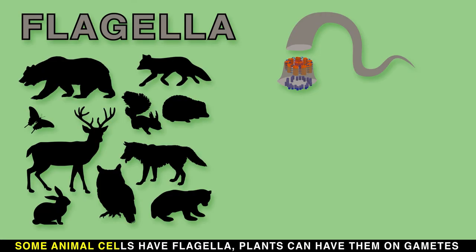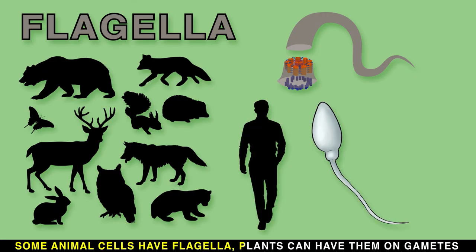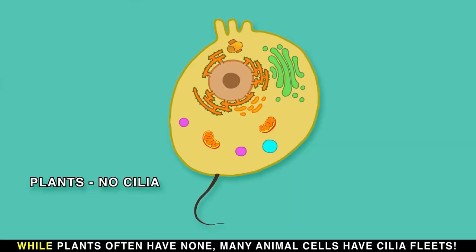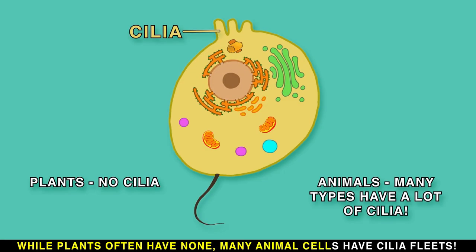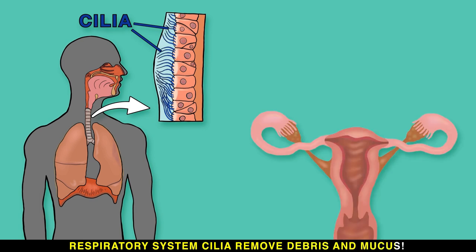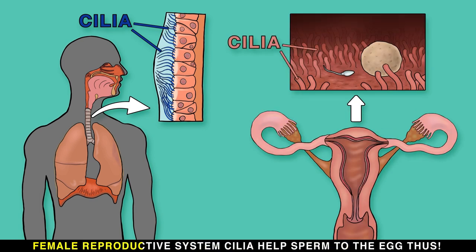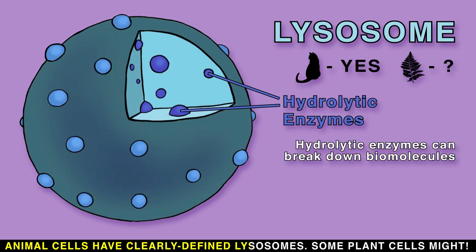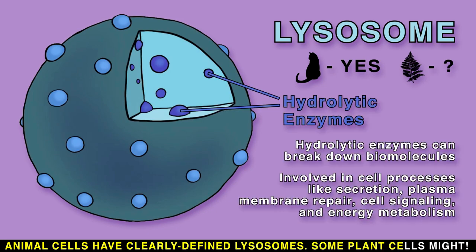Some animal cells have flagella. Plants can have them on gametes, while many plants often have none. Many animal cells have cilia — respiratory system cilia remove debris and mucus, and female reproductive system cilia help guide sperm to the egg.